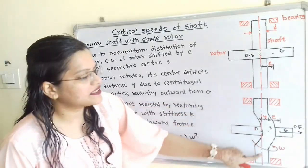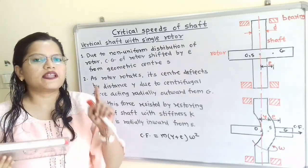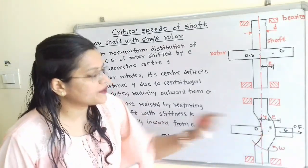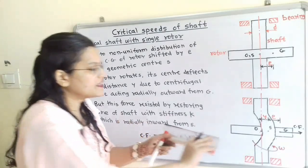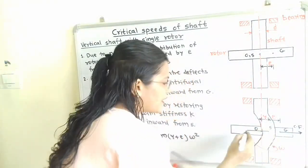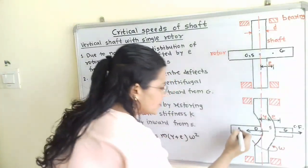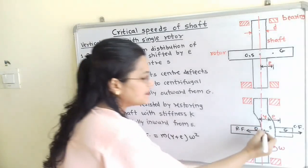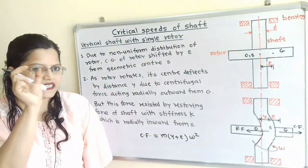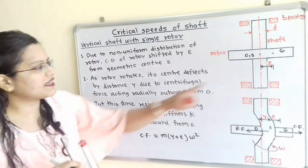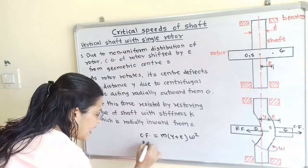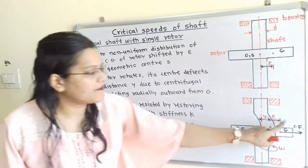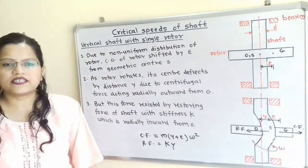The shaft has stiffness K, so a restoring force also acts in the opposite direction of the centrifugal force, passing through point S in the radially inward direction. The restoring force Rf equals stiffness K multiplied by displacement Y, that is Rf = KY. From this diagram, we can say that centrifugal force equals restoring force.